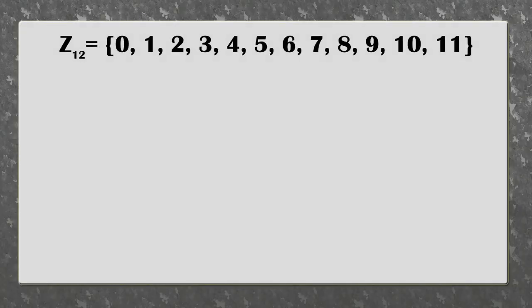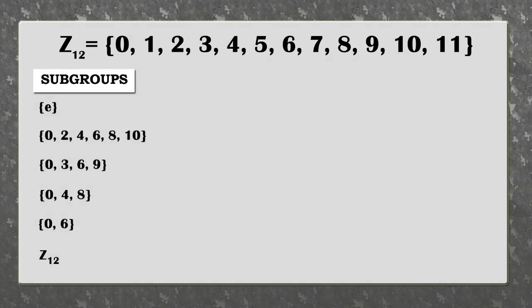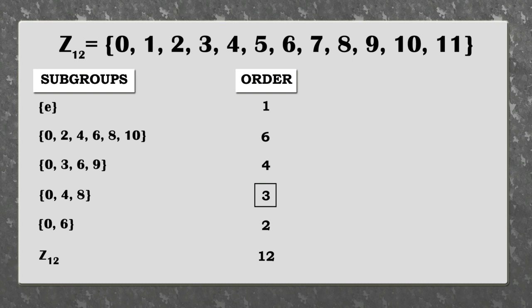Let's take another example: the group of integers modulo 12. Here's a list of all the subgroups of this group. This group contains one subgroup of prime order two and one subgroup of prime order three. In other words, this group contains one Sylow 2-subgroup and one Sylow 3-subgroup.